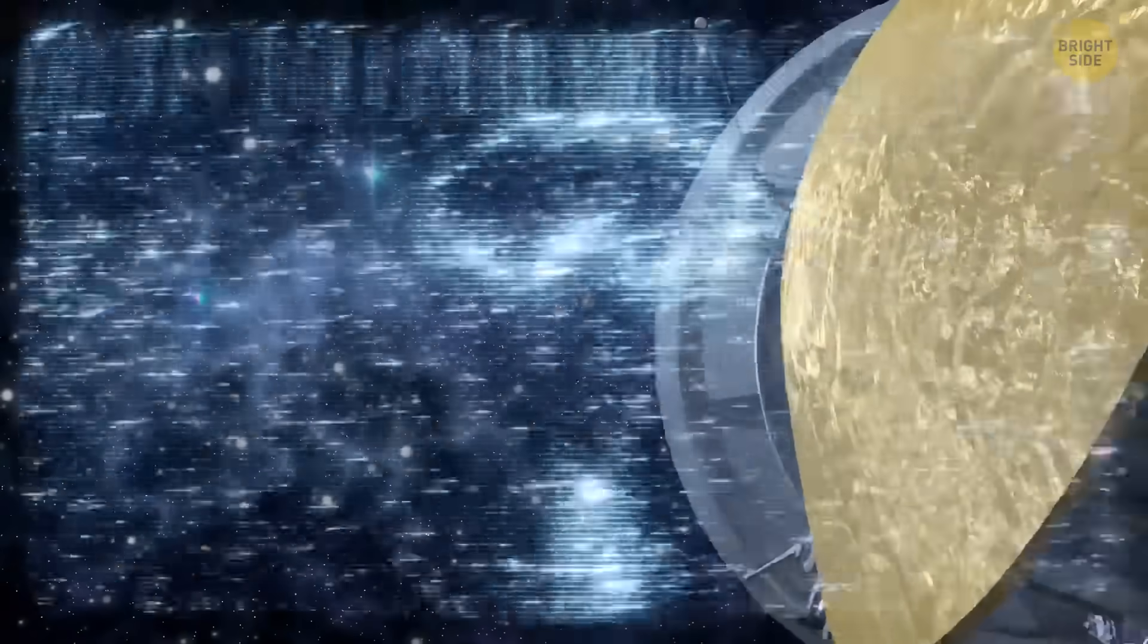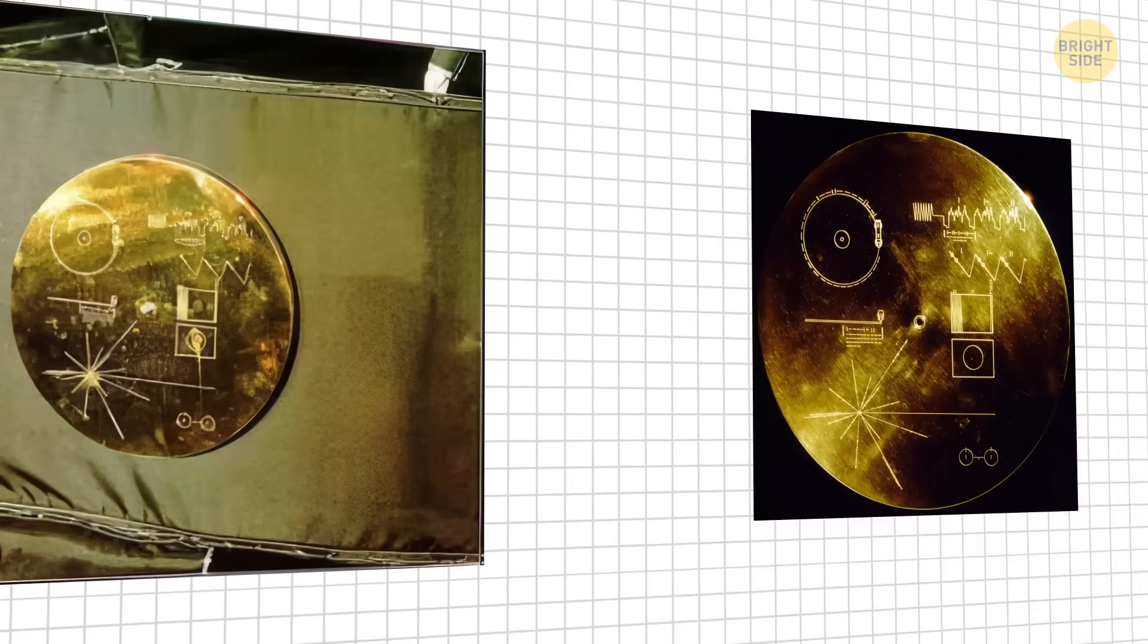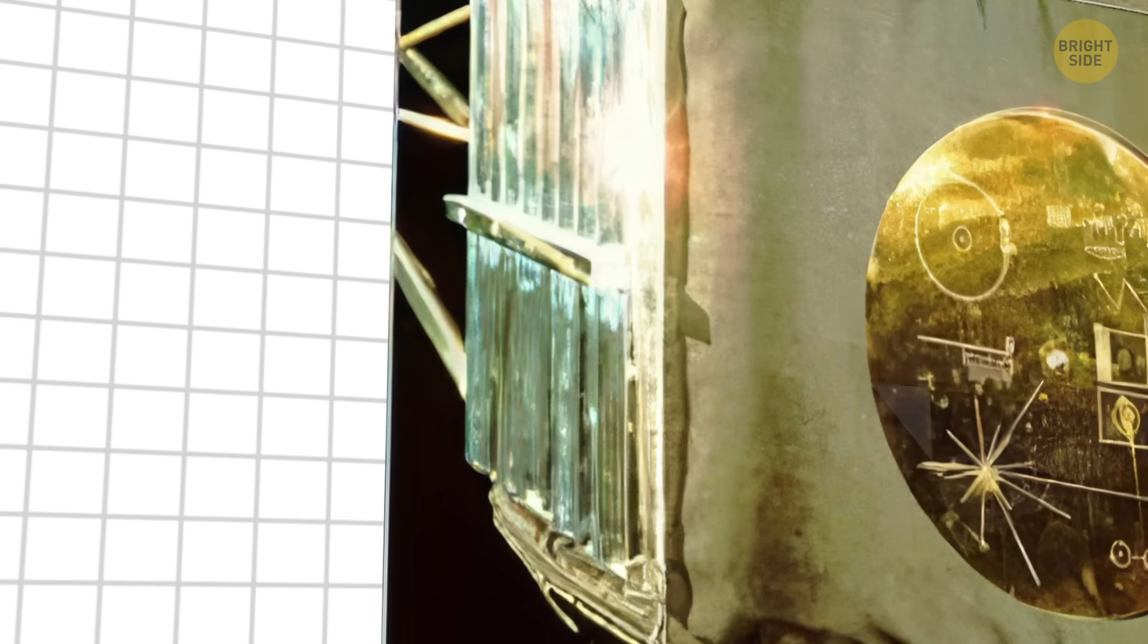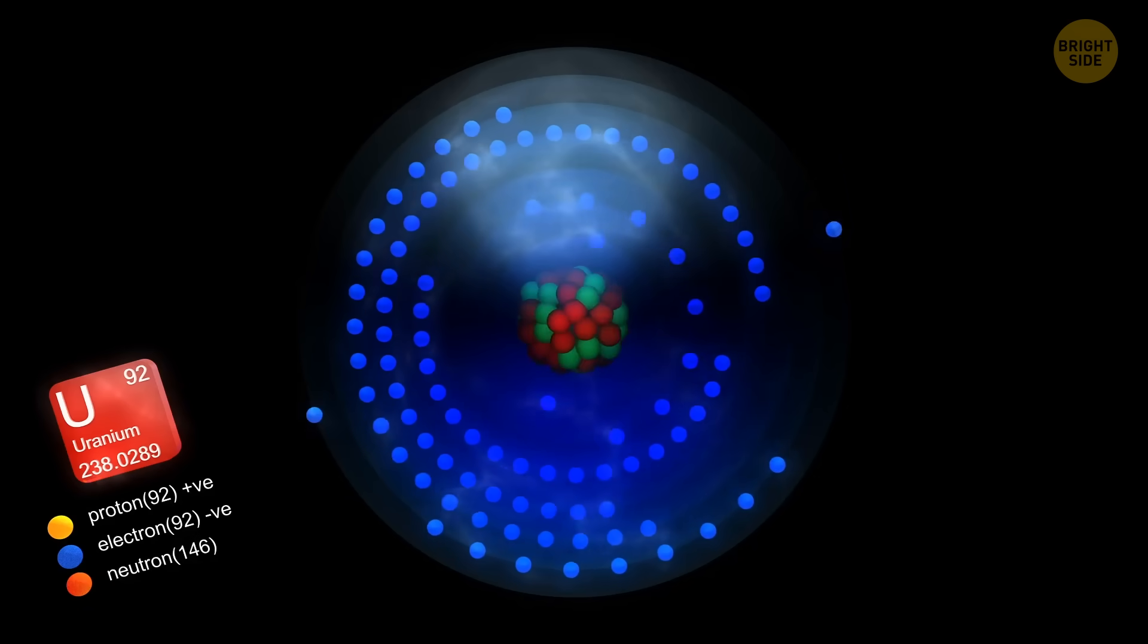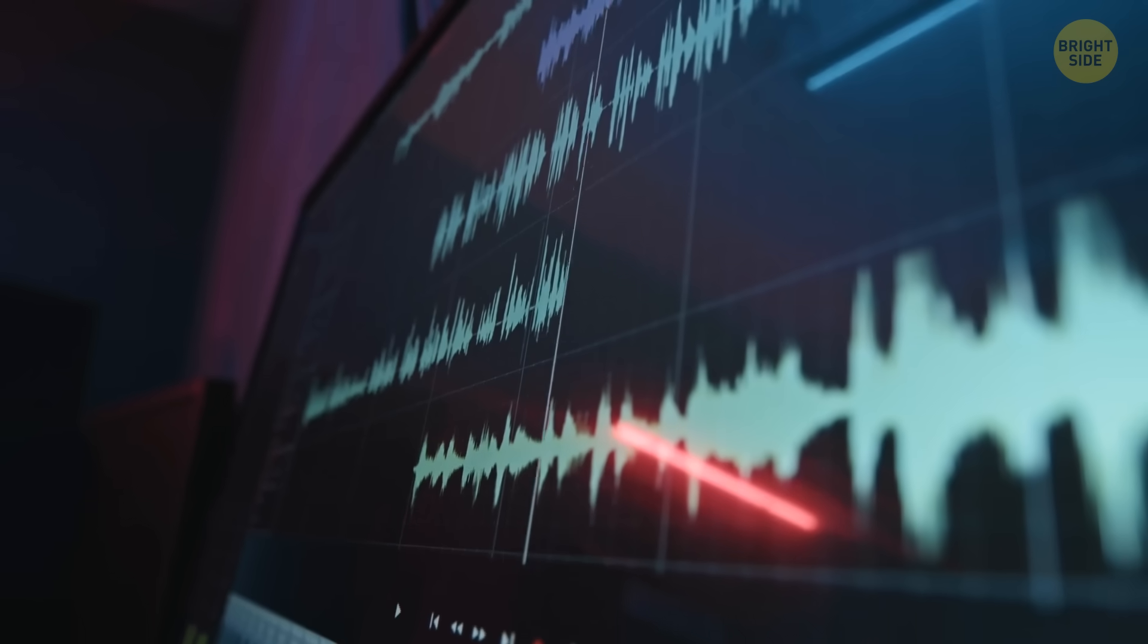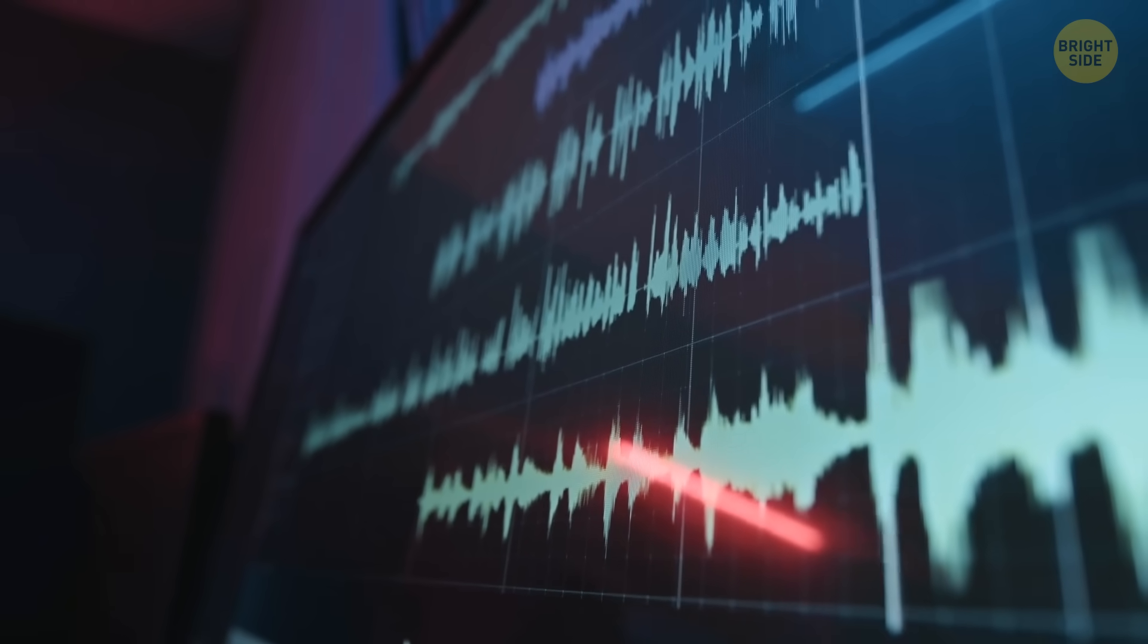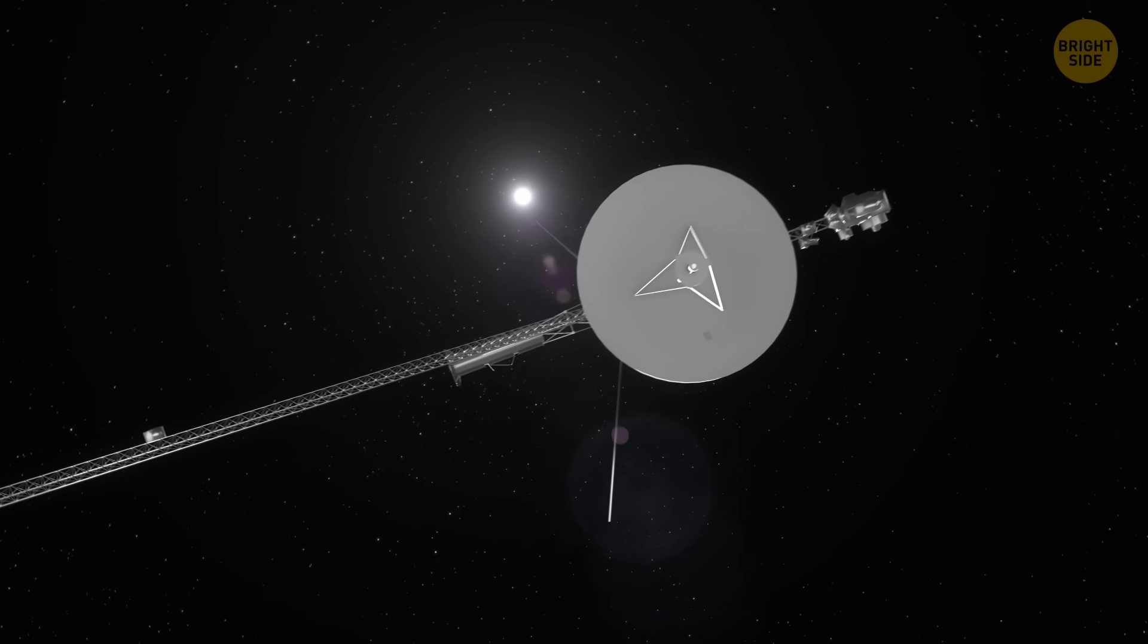Each Voyager carries a golden record, a time capsule from Earth for other civilizations it might meet. The record covers include instructions for playing it, a map showing Earth's location, and a drawing of a hydrogen atom. The records are cleverly plated with uranium, so the decay of the uranium could help discoverers figure out when the record was made. The records contain 115 images showing Earth, humans, animals, plants, and our solar system. They include natural sounds like waves and birdsong, greetings in 55 languages, brainwave recordings, and a mix of music ranging from Beethoven to Chuck Berry and folk songs.